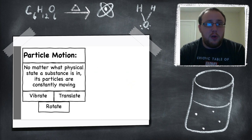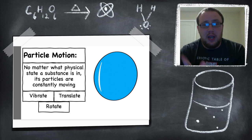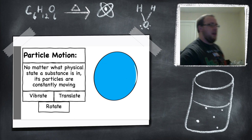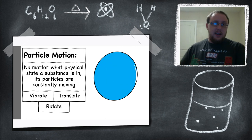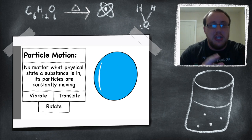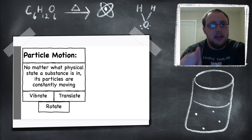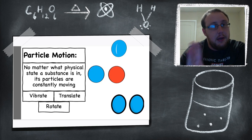The final type of particle motion is rotation. Rotation is pretty simple — it's just rotating around an axis, just like our Earth does, or like me in this spinning chair going around. All this rotating is just moving around an object or an axis. So your three types of particle motion are vibration, translation, and rotation.